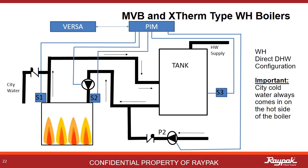Moving on from hydronic and into type WH appliances — as in water heaters. With an MVB or X-Therm purchased to be a water heater, there is only one mode of operation, so the plumbing is more specific. Here is a drawing for a water heater application. Important notes: city cold water always comes in on the outlet side of the boiler to be mixed with the hot water the boiler is producing on the way to the tank. Introducing the city cold water on the inlet side of the boiler will likely lead to going below the required minimum inlet temperature of 120 degrees Fahrenheit, resulting in condensing in the wrong part of the boiler. Here the tank works like a decoupler, and the S3 system sensor is placed in a dry well in the tank.